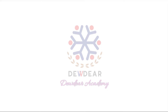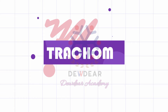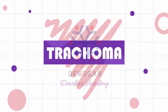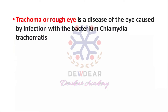Welcome to Dodear Academy. In this video, I am discussing trachoma. Trachoma, also known as rough eye, is a disease of the eye caused by infection with the bacterium Chlamydia trachomatis. The term is derived from an ancient Greek word meaning rough. It is an infectious eye disease caused by the bacterium Chlamydia trachomatis.